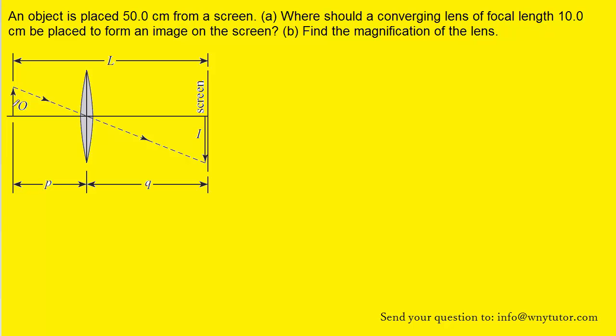So the object is represented by this arrow right here, and then we have the converging lens placed in this position. Of course we know the distance from the object to the converging lens is represented by P, and then the distance from the converging lens to the image formed on the screen is represented by Q. Notice that we have called L the distance from the object all the way to the screen, and in this case that distance is 50 centimeters.